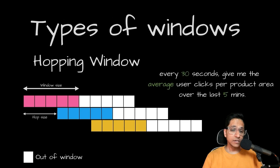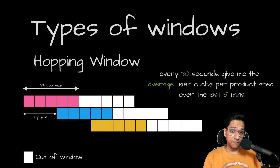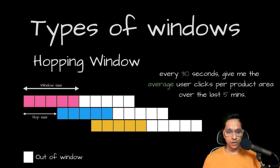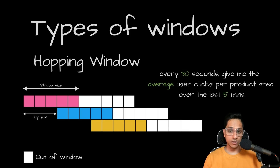There are several types of windows. The first one is the hopping window. This window type has a defined window size and a hop size. They are based on time intervals and are fixed-size, possibly overlapping windows. Because hopping windows can overlap, a record or an event can belong to more than one such window. For example: every 30 seconds, give me the average user clicks per product area over the last five minutes — this is a good example for a hopping window.